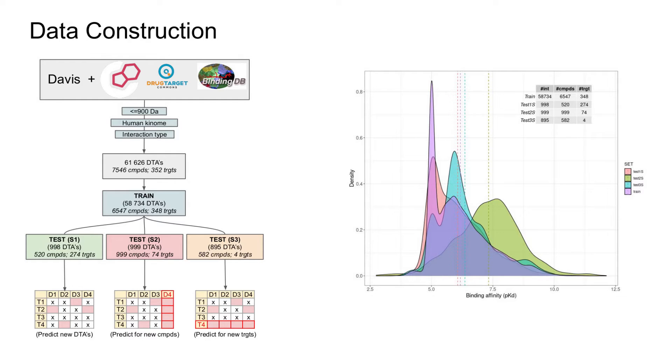So for further research, we used the Davis dataset comprising 68 compounds and around 400 kinases and extended the compound space by including experimentally measured binding affinities across multiple resources such as ChEMBL, BindingDB, and Drug Target Commons.